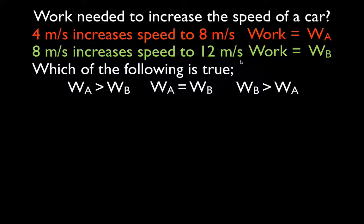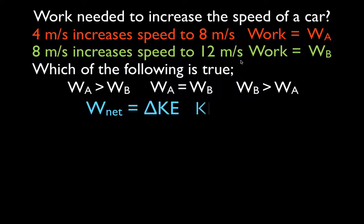We're not concerned so much about the absolute change — we just want to compare the two. We've been given the velocities but we want to know work. We're going to use our work-energy theorem, which says that the net work on an object equals the change in kinetic energy, where kinetic energy is one-half mv squared.